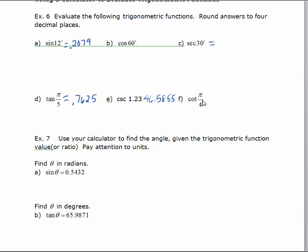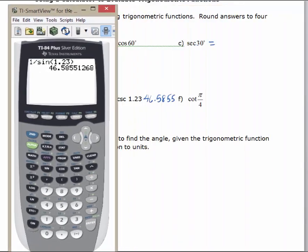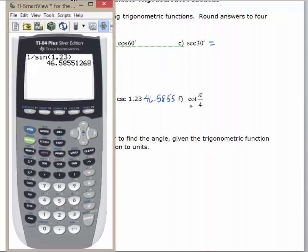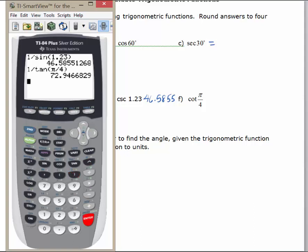Now we'll evaluate the cotangent of π/4. We know that's 1 over the tangent of π/4, so type 1 divided by tangent of 2nd-caret (π) divided by 4, then hit enter. Out to 4 decimal places: 72.9467.